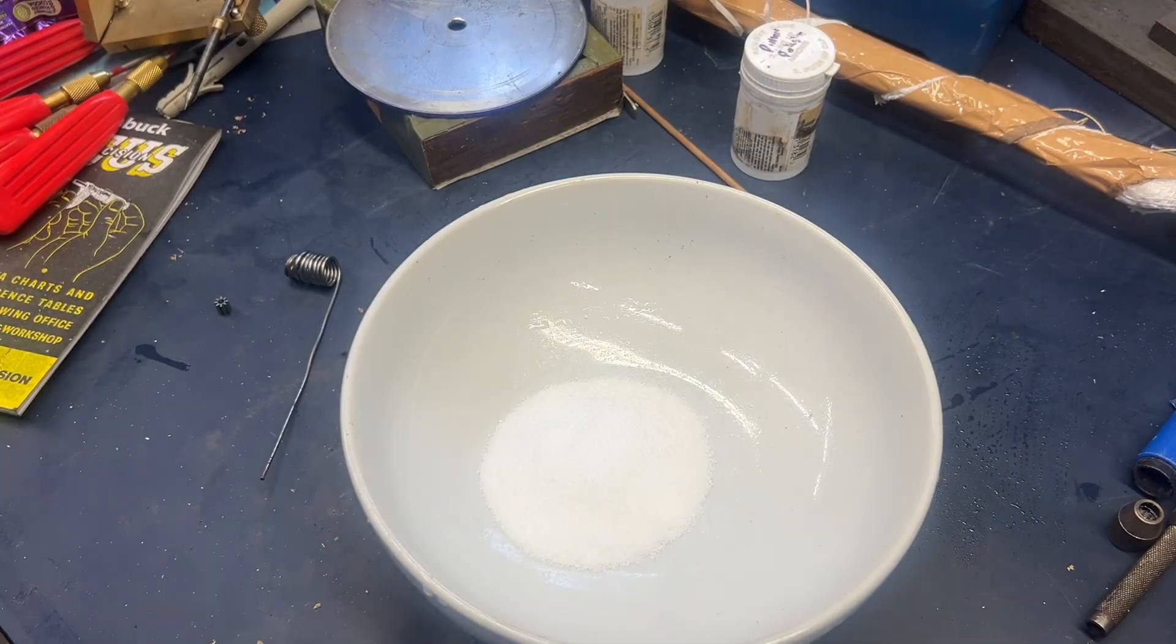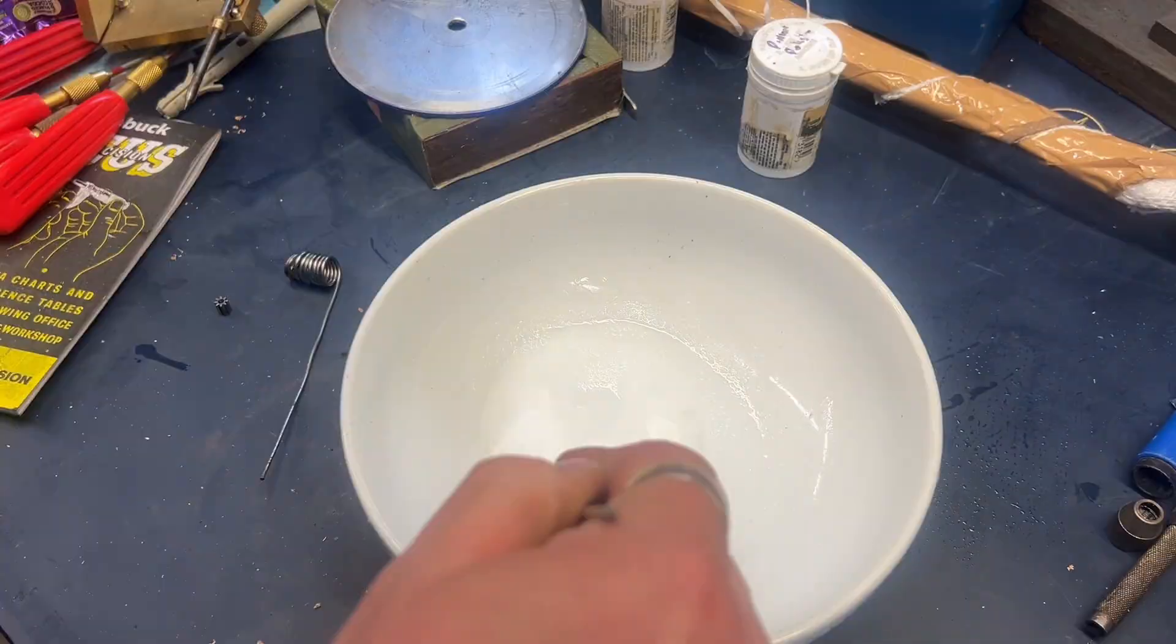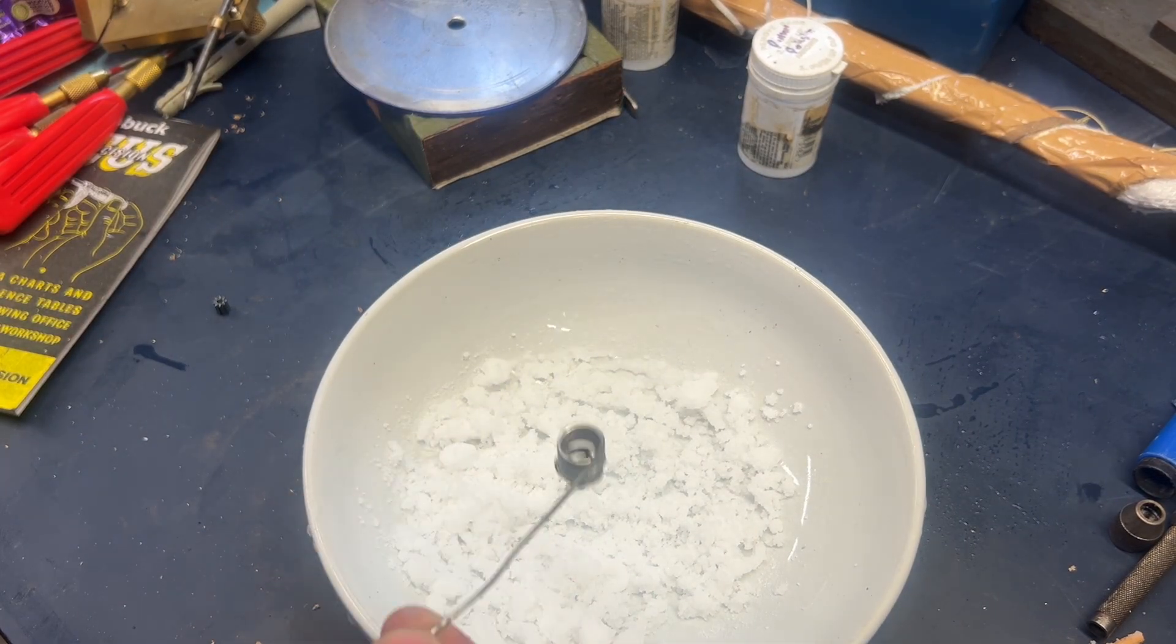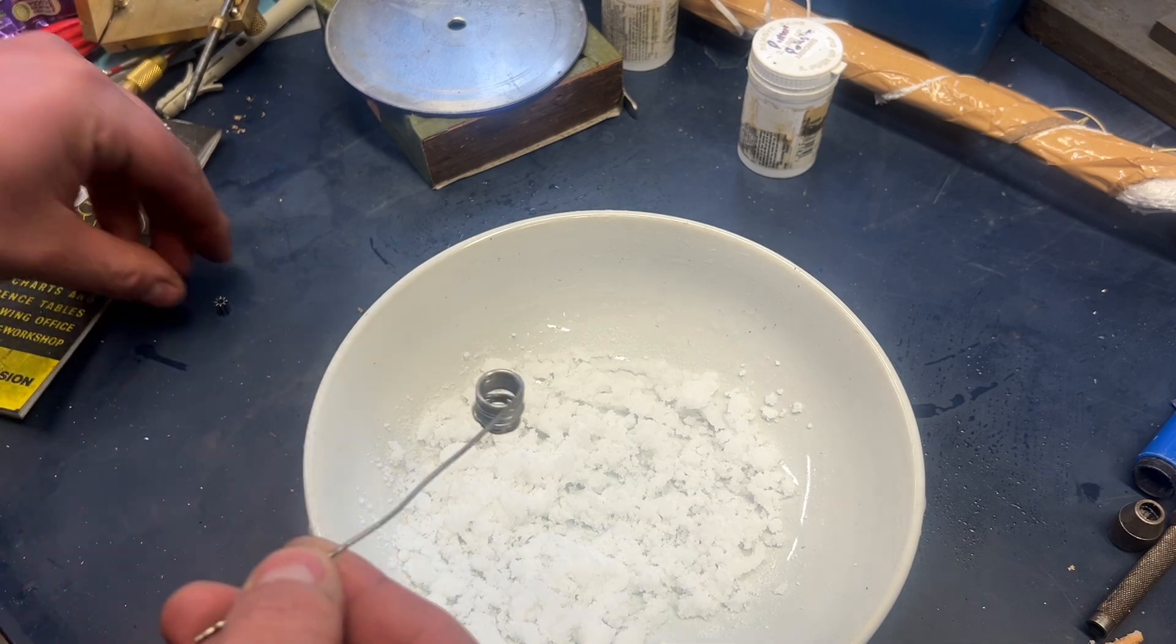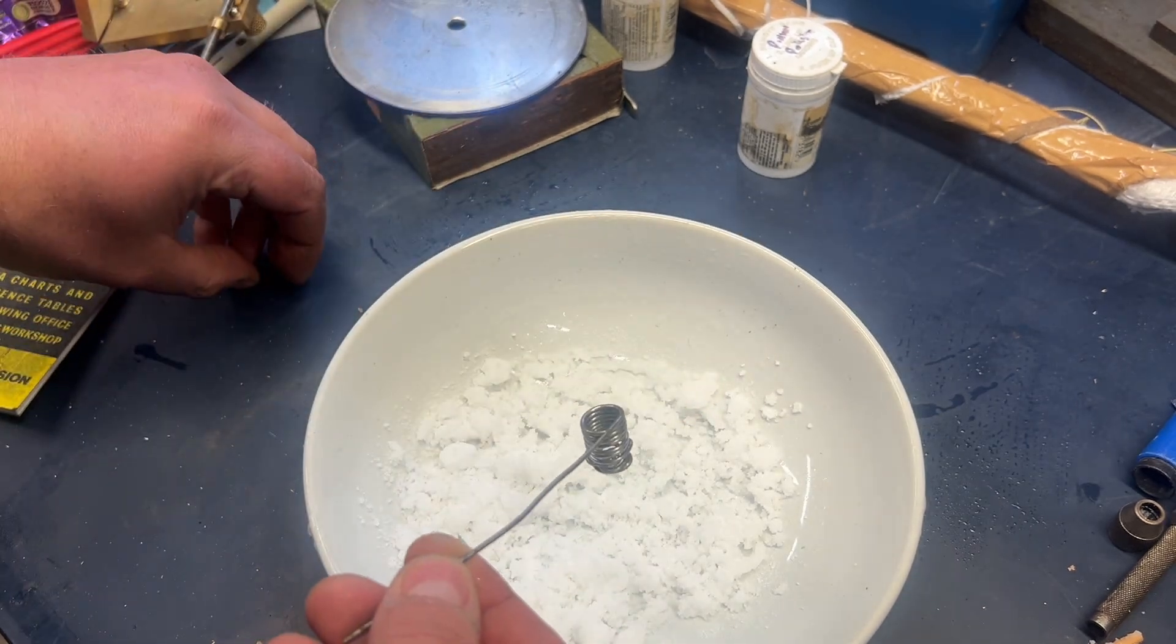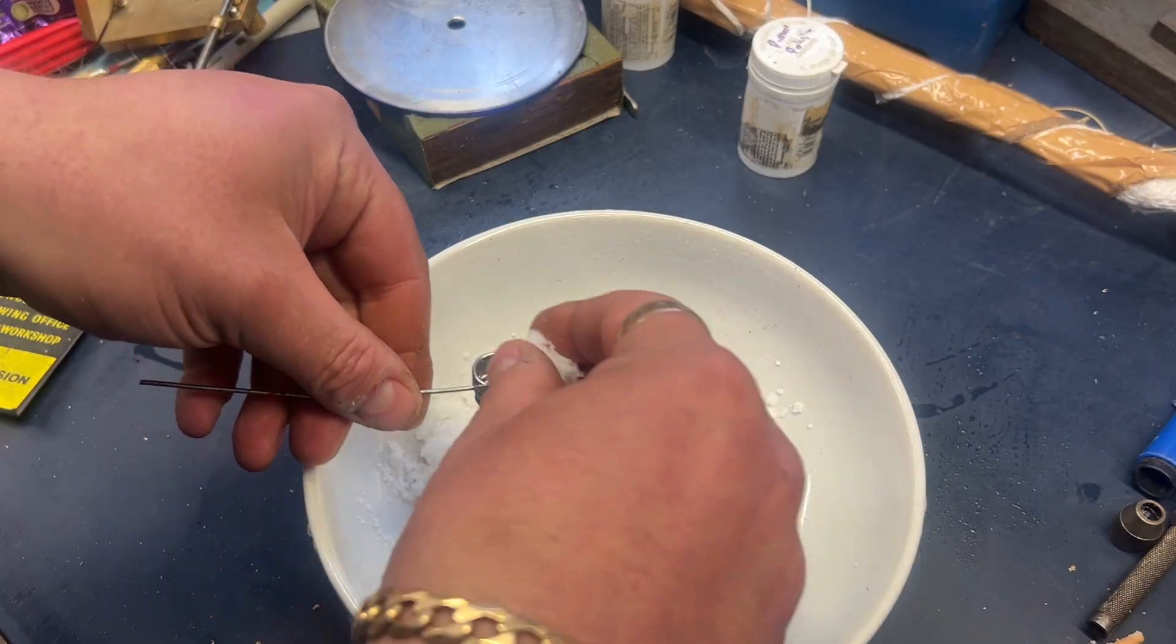Some boric acid was used and mixed with rubbing alcohol to make a slurry. This was placed in a little wire basket along with the pinion, with the pinion completely compact and surrounded to ensure there was no oxidation during the heat treating process.